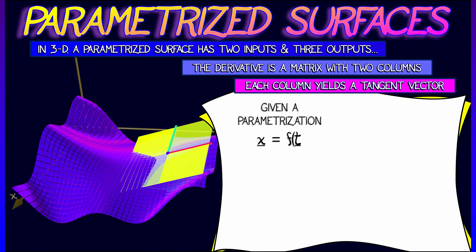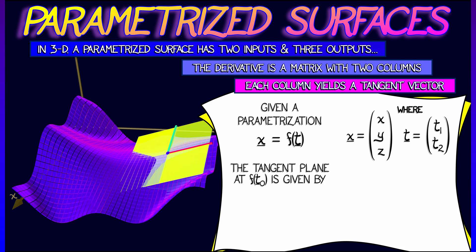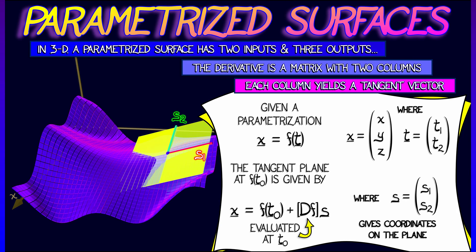So, let's say that you have x as a function of t, where now the outputs x are really x, y, and z, and t is really t1 and t2. There are two parameters in this case. Now, the tangent plane at a particular point, f at t0, is given by the exact same formula, f of t0 plus the derivative of f times s, but now s, your parameters for the tangent plane, are two variables, s1 and s2.